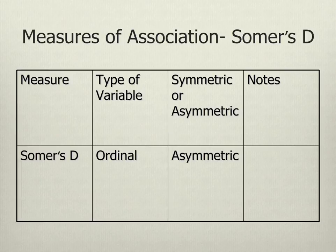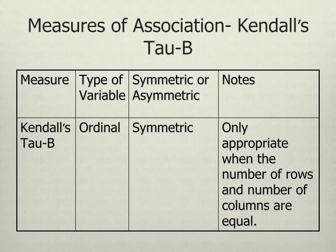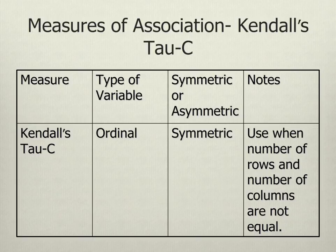Somer's D also works for ordinal by ordinal associations, but it's asymmetric, so it won't give you direction as well as strength — so why not use gamma and get the direction too? Kendall's tau B is also appropriate for ordinal by ordinal data. It's symmetric, giving direction as well as strength, but it's only appropriate when the number of rows and columns are equal — which can be a little confusing. Kendall's tau C is also appropriate for ordinal data and like tau B is symmetric, but you can only use it when the number of rows and columns are not equal. Again, a potential source of confusion — let's just use gamma for this class.